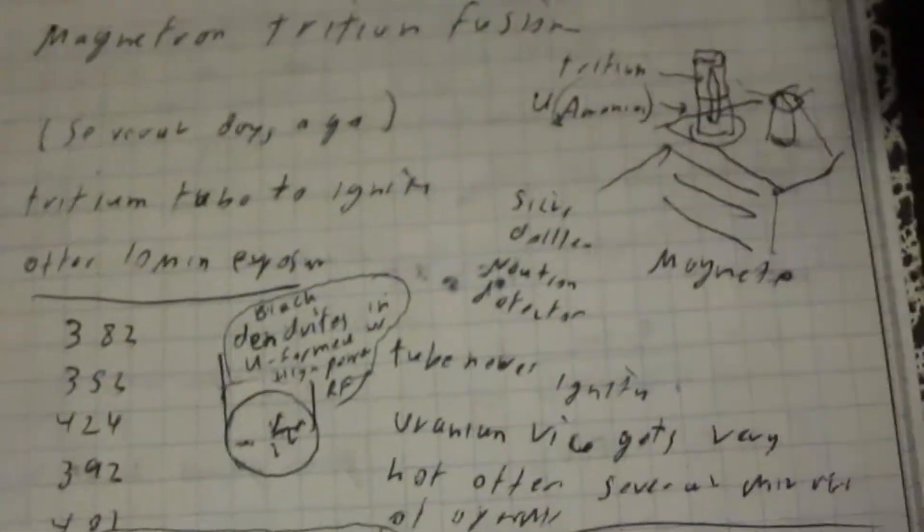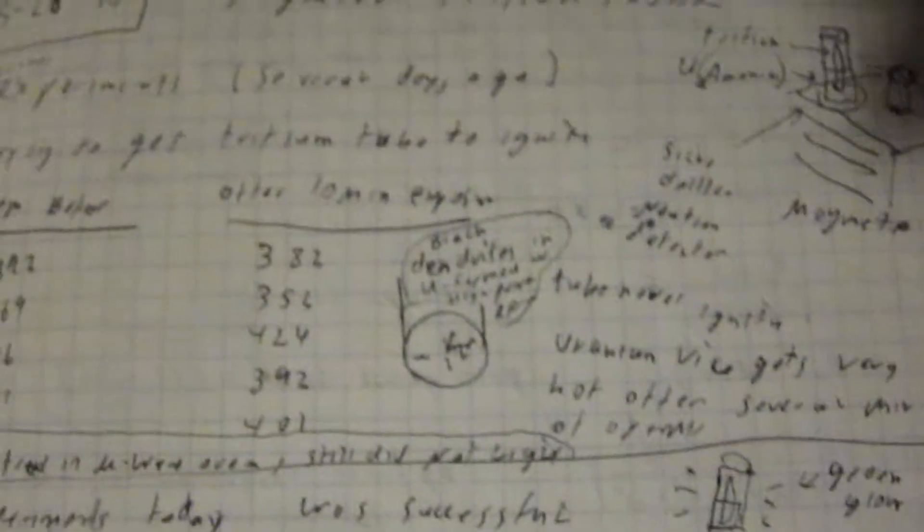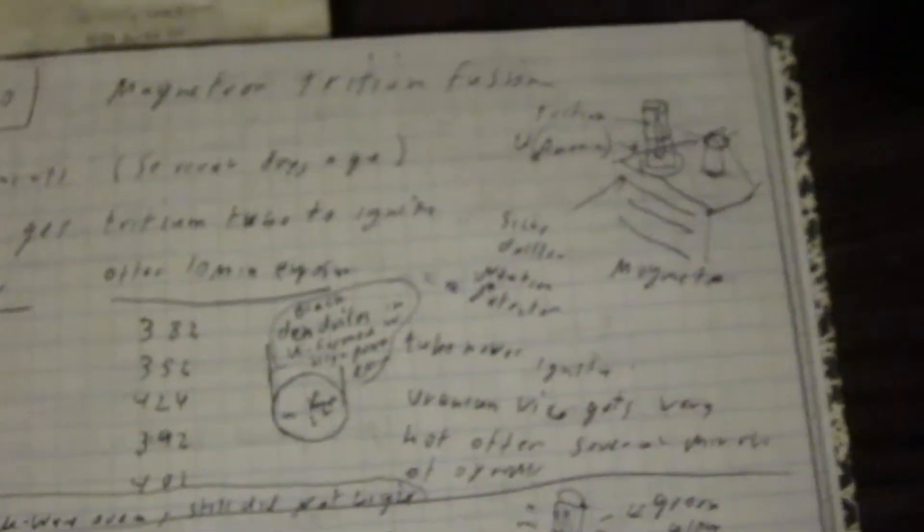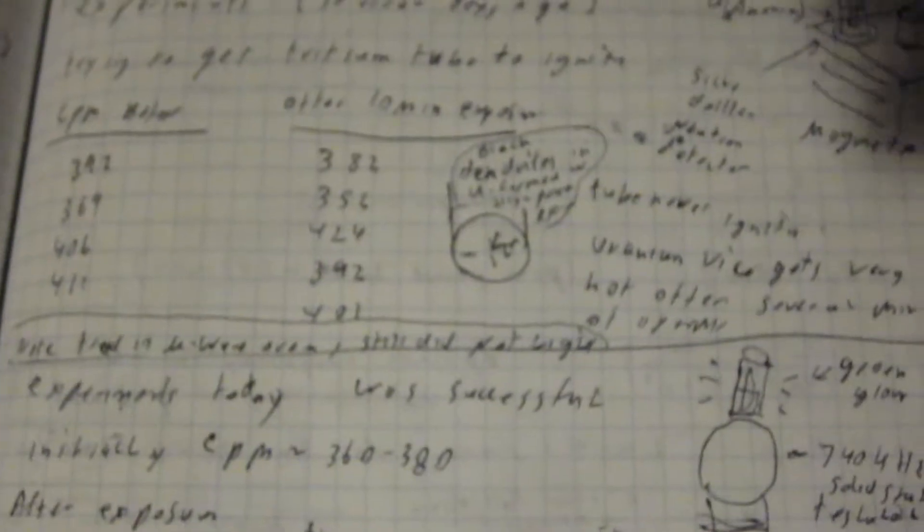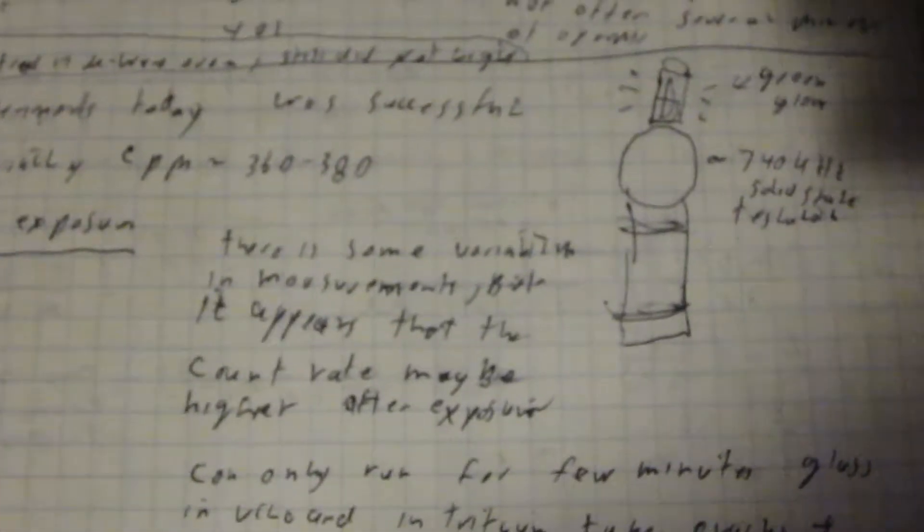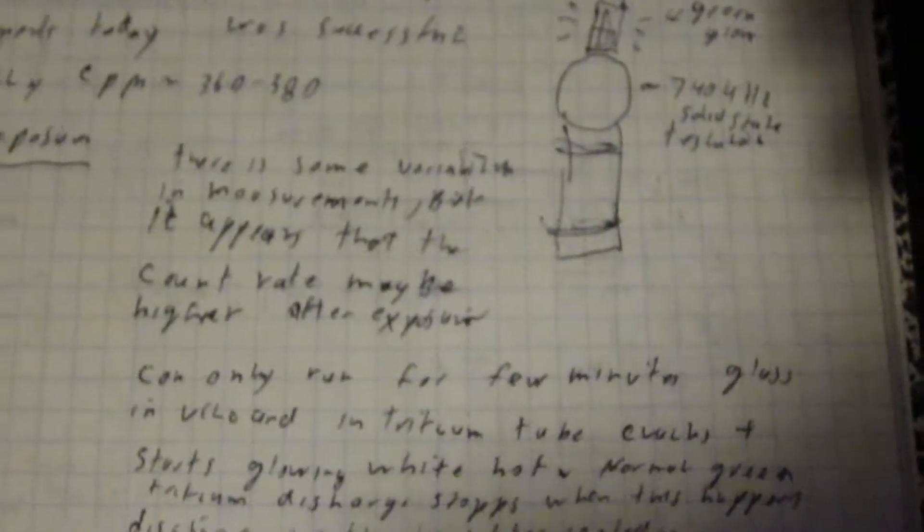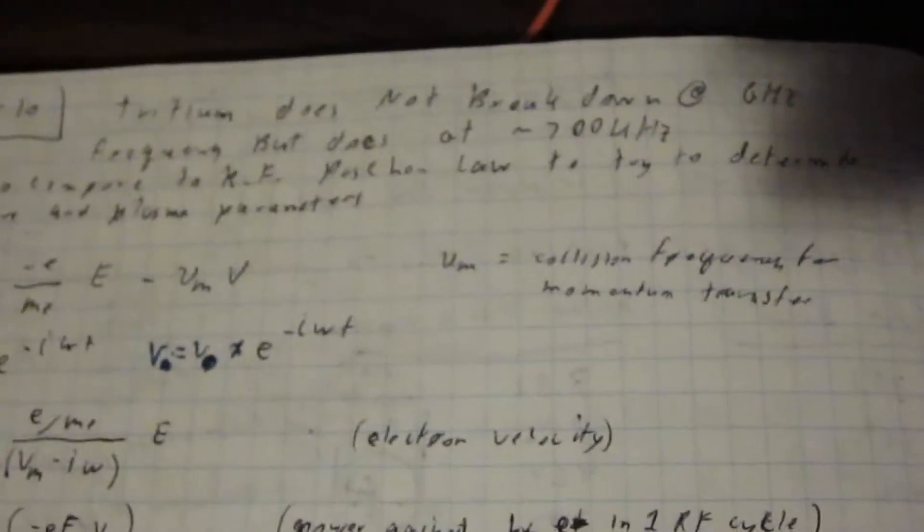I did try it with a magnetron. If you study plasma physics, the RF... if you look at the Paschen curve for RF frequencies, it becomes shorter. It's actually harder to break down a plasma at really high frequencies like 2.5 gigahertz that the cooker magnetrons operate at. So I was not able to excite it with that, but I was able to excite it with Tesla coils. And they were at a higher frequency. Tritium does not break down in the gigahertz.